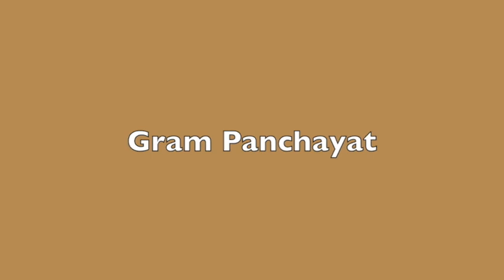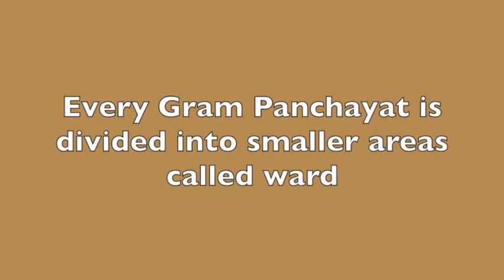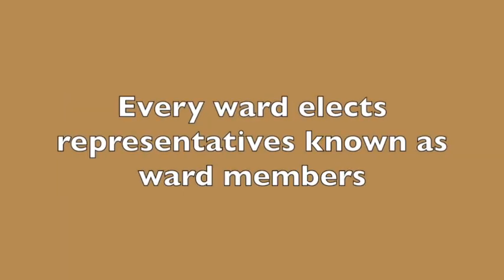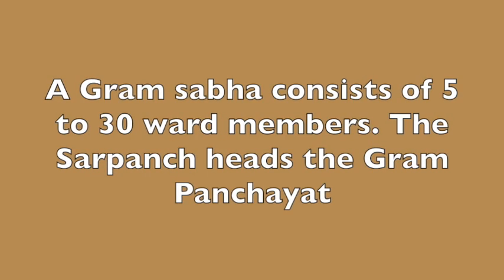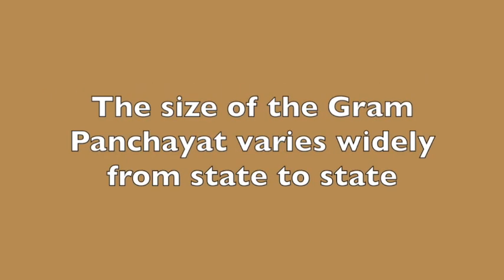B. Gram Panchayat. Gram Panchayat can be set up in villages with a population of around 500. Every Gram Panchayat is divided into smaller areas called wards, and every ward elects representatives known as ward members. A Gram Panchayat consists of 5 to 30 ward members. The Sarpanch heads the Gram Panchayat. The size of the Gram Panchayat varies widely from state to state.